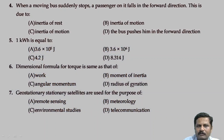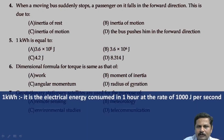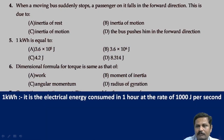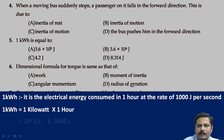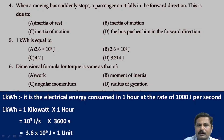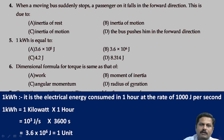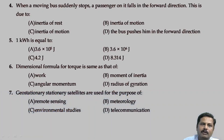1 kilowatt hour is the commercial unit of electrical energy. It is the electrical energy consumed in 1 hour at the rate of 1000 joules per second. If we write 1 kilowatt hour equals 1 kilowatt into 1 hour, then simplifying: 1 kilowatt is 10 to the power of 3 joules per second, and 1 hour has 3600 seconds. So we get 3.6 into 10 raised to 6 joules. Therefore, 1 kilowatt hour equals 3.6 into 10 raised to 6 joules. Option B is the right answer.